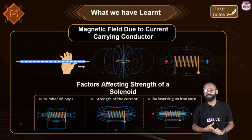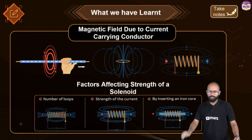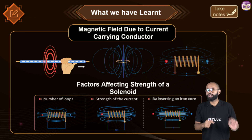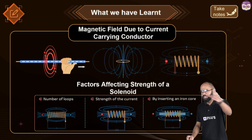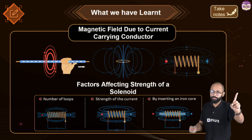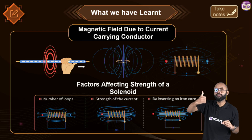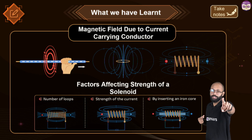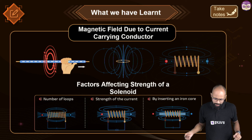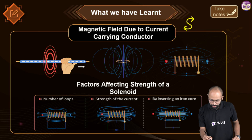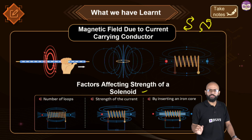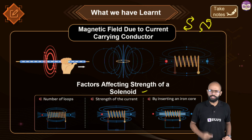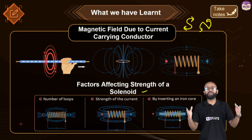Summary: Magnetic field due to a current-carrying conductor — the right-hand thumb rule gives direction of magnetic field around a straight conductor. Around a loop, a shortcut (not for exams) tells you which side field lines come out of. Clockwise current = south pole; anti-clockwise current = north pole. Factors affecting solenoid strength: number of loops, strength of current, and inserting a soft iron core inside the solenoid.